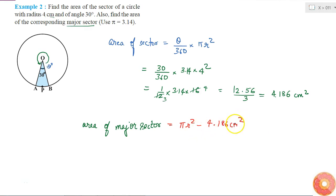What is the value of pi r squared? It is 3.14 into r squared is 16 minus 4.186.